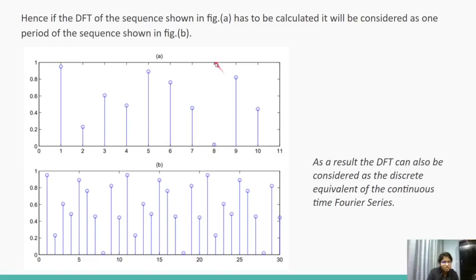This means that if the DFT sequence shown in figure A has to be calculated, it will be considered as one period of the sequence shown in figure B. It's because of this that the DFT can also be considered as the discrete equivalent of the continuous time Fourier series.